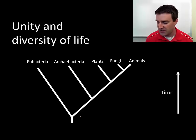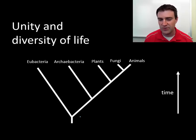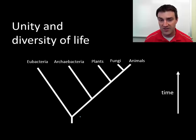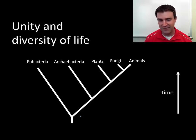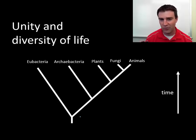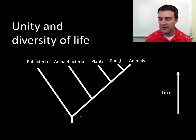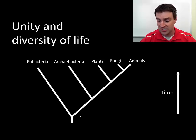With diagrams like these, we can make predictions about who is more related to whom in the history of life and what happened in the history of life. We'll eventually try to justify this diagram. Essentially, there are two very broad groups that have differences from each other.